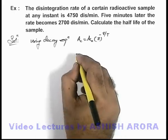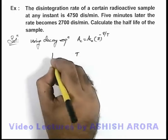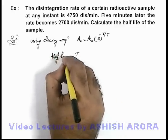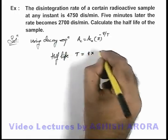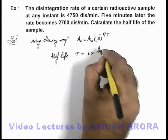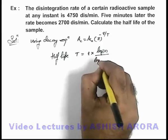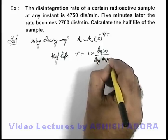And if we rearrange the expression for the half-life, for half-life it can be given as t multiplied by log 2, divided by log of activity not by activity.